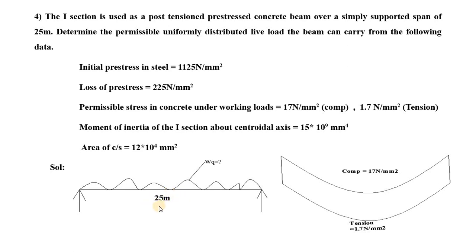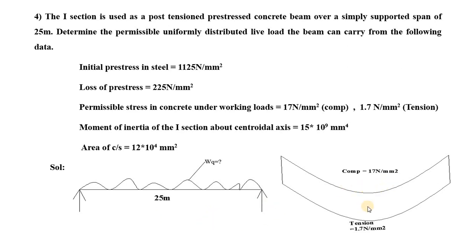The span is 25 meters. As they have given the data of stress, the compressive stress is 17 Newton per mm square and tension is 1.7 Newton per mm square. As this is a simply supported beam carrying a UDL, this will be sagging in nature. Because of this sagging, compression will be at the top and tension will be at the bottom.